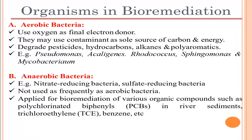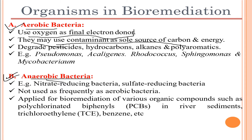Organisms in bioremediation can be of aerobic and anaerobic types. Aerobic bacteria use oxygen as a final electron acceptor, while anaerobic bacteria work under hypoxic or oxygen-free conditions. Aerobic bacteria may use contaminants as their sole source of carbon and energy, degrading pesticides, hydrocarbons, alkanes, and polyaromatics. Examples of aerobic bacteria include Pseudomonas, Alcaligenes, Rhodococcus, Sphingomonas, and Mycobacterium.